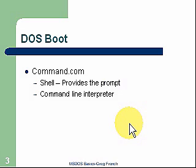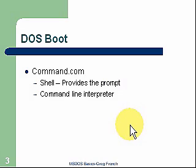If it doesn't recognize a command, that is what we call an external command. That would be a file or utility that it would search for and run. We have internal commands — 80 plus — and external utilities or external commands, and that's over 100.